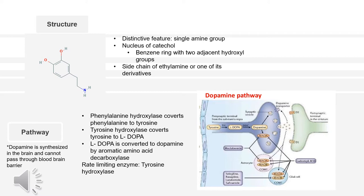In the beginning step, phenylalanine hydroxylase converts phenylalanine to tyrosine. Then tyrosine hydroxylase converts tyrosine to L-DOPA. L-DOPA is converted to dopamine by aromatic amino acid carboxylase, and then the dopamine can subsequently be converted to epinephrine or norepinephrine. The rate-limiting step here is tyrosine hydroxylase.